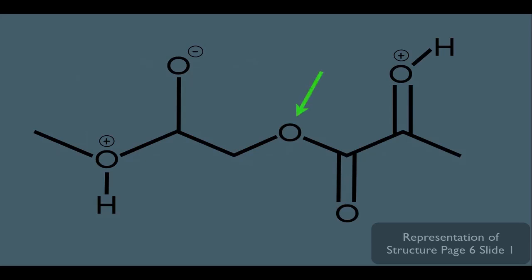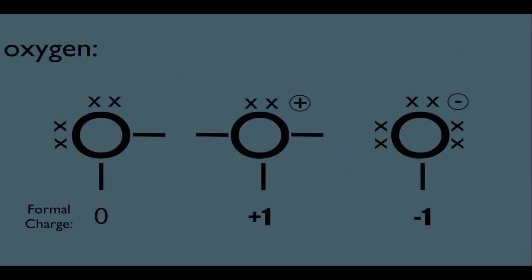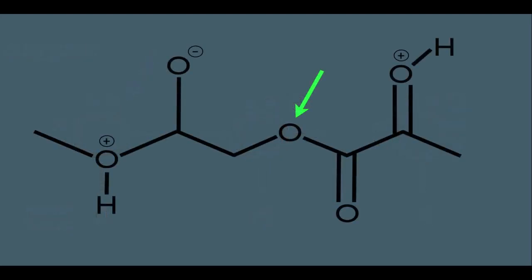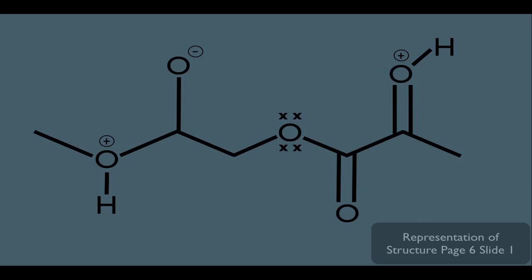First of all, notice this oxygen right here has no formal charge indicated. What does that mean? Remember, we learned in the previous online lecture that if oxygen has no formal charge, then typically it has a total of two bonds and two lone pairs. So going back to our molecule here, because it has no formal charge, notice it does have its two bonds — one to the left, one to the right — therefore it must have two lone pairs. So here's a case of formal charges telling us how many lone pair electrons an atom might have.